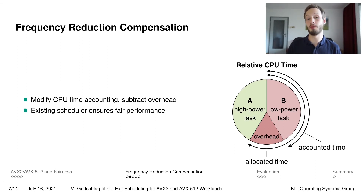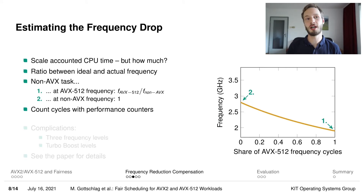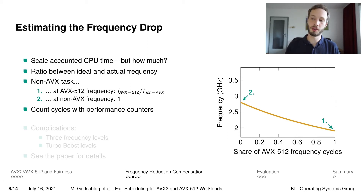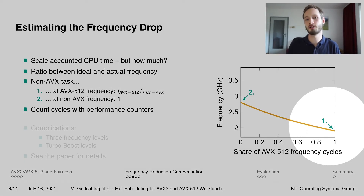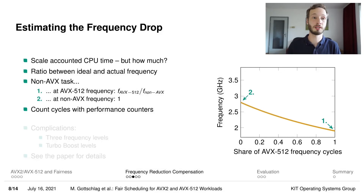The main challenge here is to determine how much frequency reduction overhead we have and which task is affected. The frequency reduction overhead is basically unnecessary frequency reduction, so it can be represented by the ratio between the ideal frequency during a time slice — the frequency at which the code could have been executed — and the actual CPU frequency during that time slice. So if, for example, we have a non-AVX task that is always executed at very low AVX512 frequencies, then the ratio by which we want to scale the CPU time is just the ratio between the AVX512 and the non-AVX frequency.